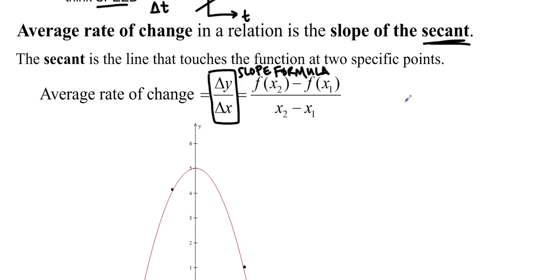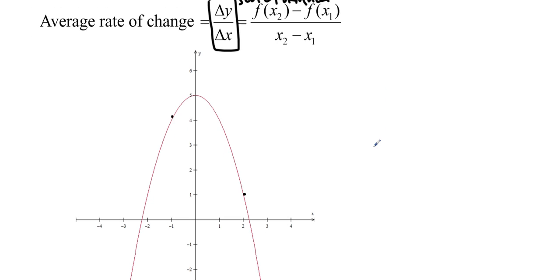The secant is the line that touches the function at two specific points. So I'm going to take my line out, and I'm going to draw a line from the two points that I want to find the rate of change for. So it's actually really hard to draw a line on both of those, so I'm just going to adjust it in a second. So you want to make sure that your line goes through both.